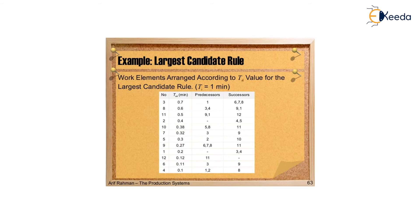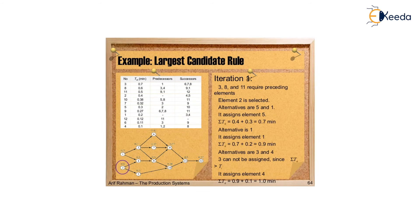In iteration 1, elements 3, 8, and 11 are the required preceding elements, so element 2 is selected. Alternatives are 5 and 1. Assigning element 5 gives 0.7 minutes; assigning element 1 gives 0.9 minutes. Alternatives 3 and 4 cannot be assigned as they exceed Tc. Assigning element 4 gives exactly 1 minute, completing workstation 1.